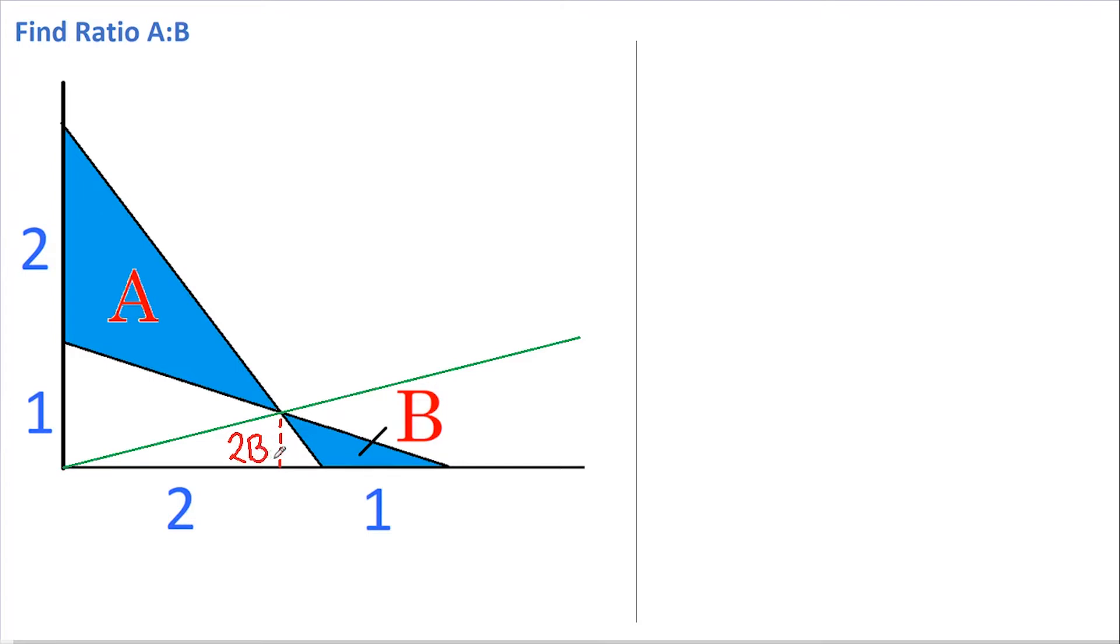Likewise, over here we have two triangles and they have exactly the same height again. The length of the base on this triangle is twice the base on this triangle. Therefore, this area must be twice this area, so this must have an area of half A.